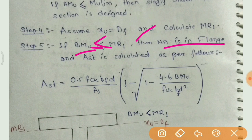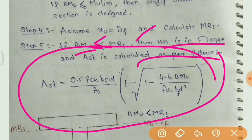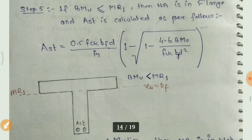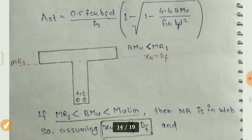AST निकालने का formula: Ast = 0.5 fck × b × d / fy × [1 minus root under (1 minus 4.6 BMU / fck × b × d²)]। यही use करना है। तो आगे बढ़ते हैं।